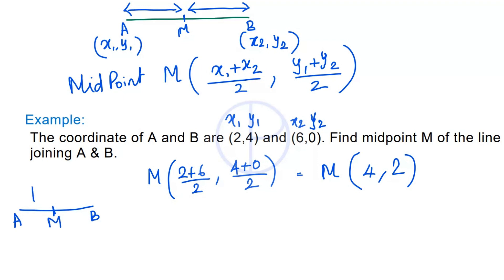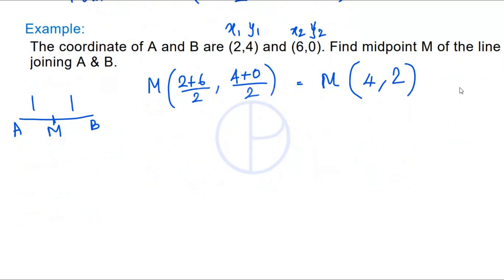Now suppose this line is split in a ratio other than 1:1. We can find a point M which splits the line based on some ratio. Let's consider the same example but where A and B are split based on a given ratio. M will come somewhere along the line, and we need to find its coordinates using a different formula.